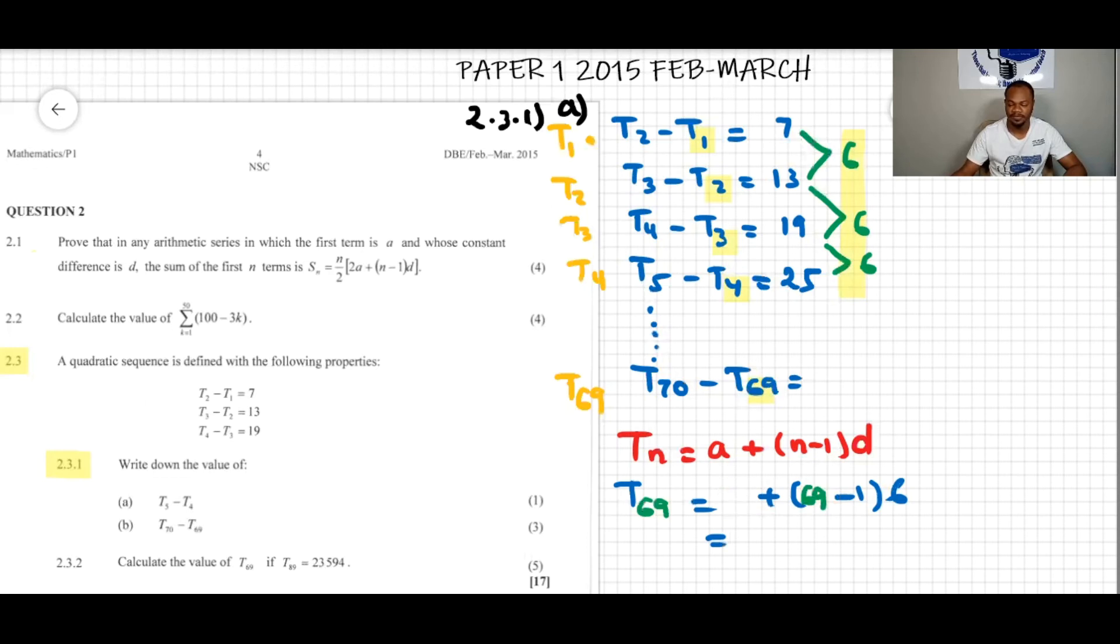This will be 7 plus 68 times 6. If we do the calculation, this is equal to 7 plus 408, which equals 415. Therefore, T69 equals 415.